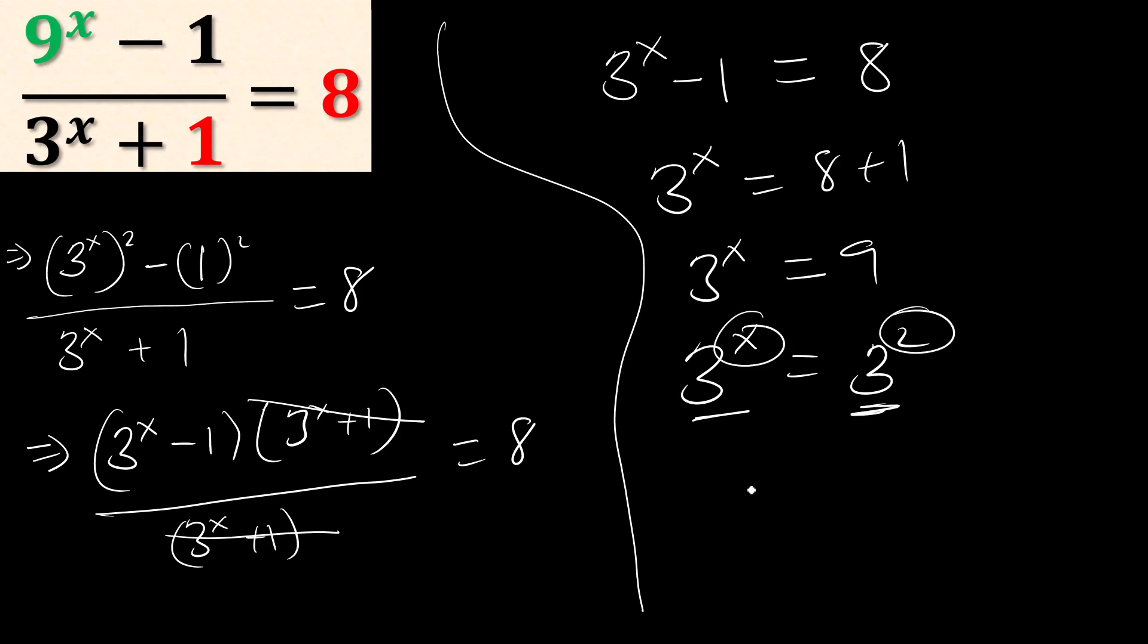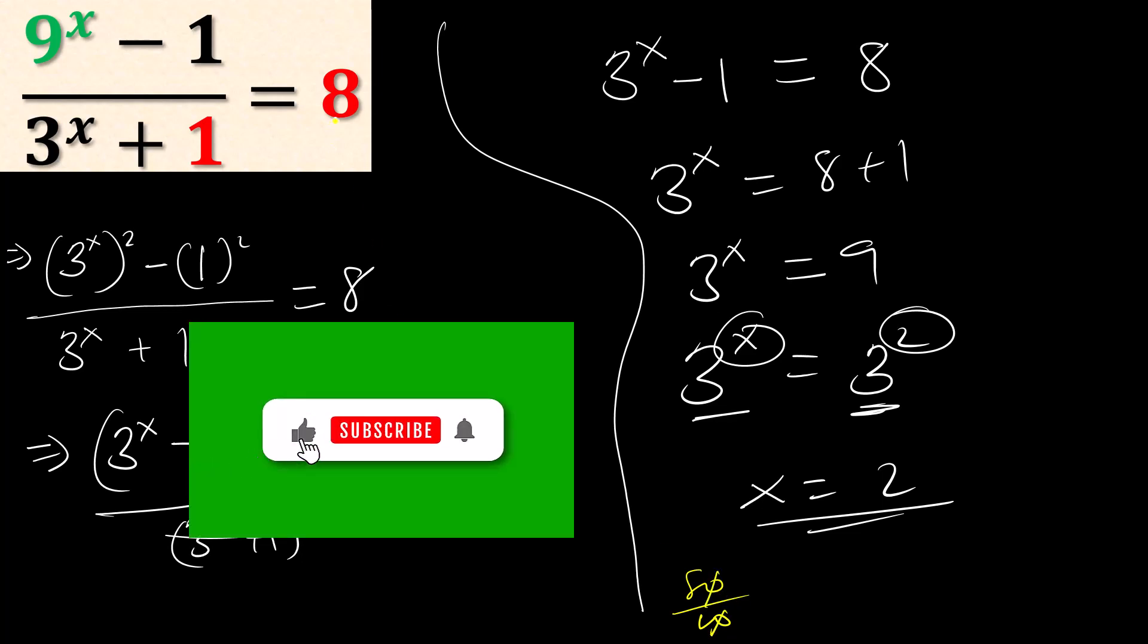Let's verify our answer. 9² is 81, 81 minus 1 is 80. 3² is 9, plus 1 is 10. So 80 over 10 is 8, so it's correct.